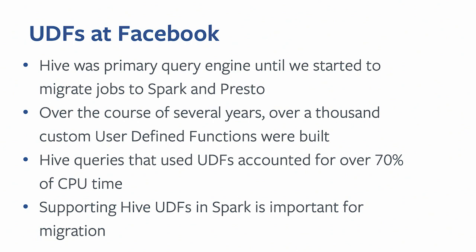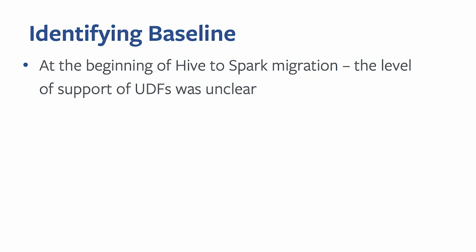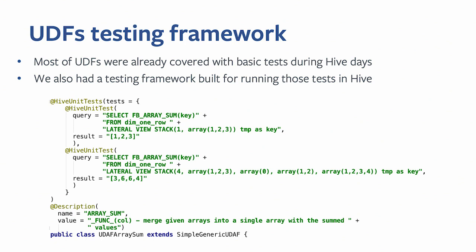At the beginning of migration, we didn't have a baseline of UDF support in Spark — some pipelines were failing, some succeeding. Fortunately, we already had an existing UDF testing framework that allowed running tests against Hive. When customers wrote custom UDFs, we encouraged them to provide basic unit tests using an annotation called HiveUnitTests, with test cases containing a query and expected result. For Spark, we extended this framework to run queries against Spark using the DataFrame API.